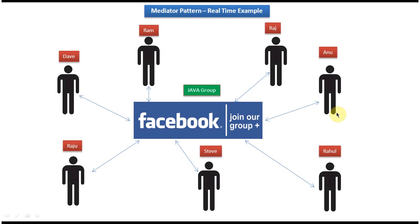Dev, Ram, Raj, Anu, Rahul, Steve, and Raju. Suppose Dave is sharing some Java link to the Java group. Then what this Facebook group will do is, it will send that link to all the members who have registered in that particular group. So here, that Facebook group is acting as a mediator. Whatever message comes to Facebook, Facebook gets the message and routes it to the different users who have registered in the particular group. So Facebook is the best example of Mediator Design Pattern.